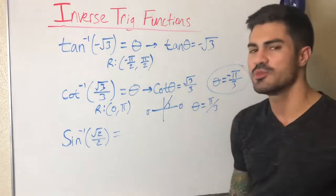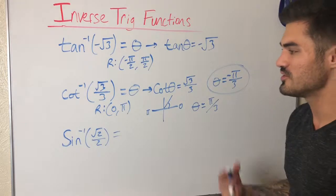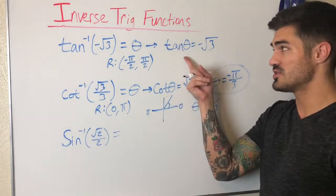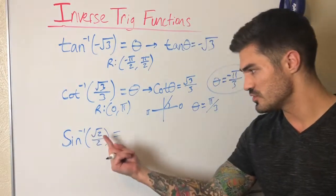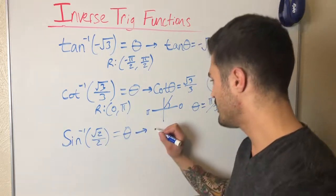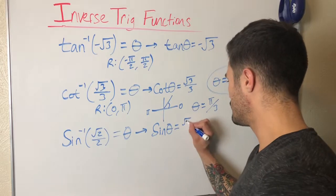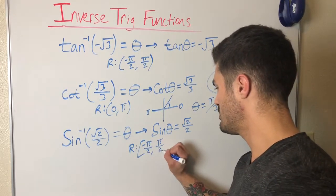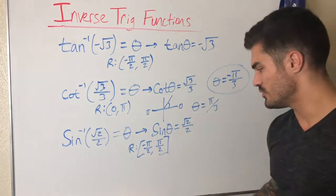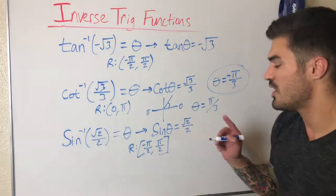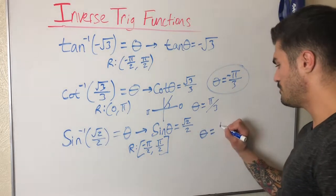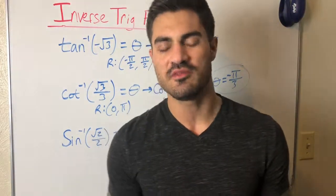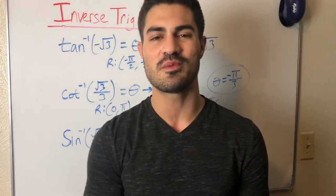So theta equals pi over three. I have a lot of these memorized from repeated exposure — but in the beginning I always found sine and cosine values first. Whatever works for you. Last example: sine inverse of root two over two. This equals theta, so sine of what angle equals root two over two, and that angle has to be between negative pi over two and pi over two. That means we're in the first or fourth quadrant. Since sine is positive, we're in the first quadrant, so theta equals pi over four. Hopefully this all makes sense — leave questions below, like, subscribe, and keep flexing those brain muscles!